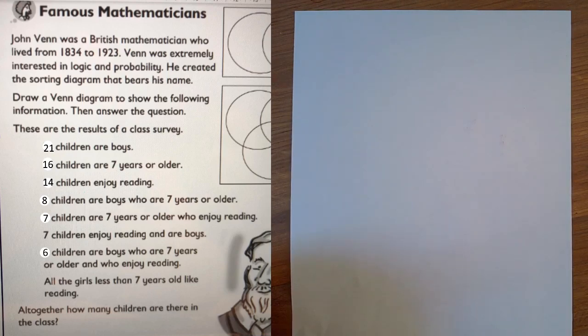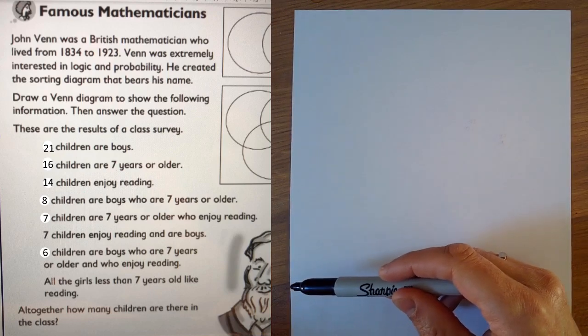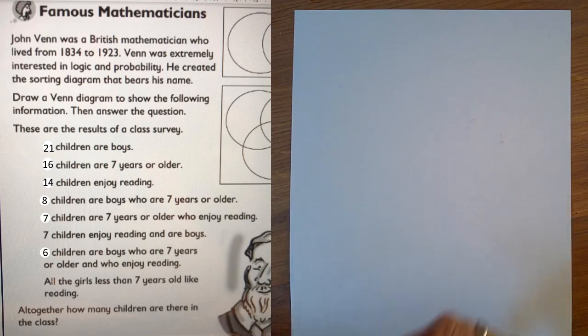I have to start by saying this is not the easiest Venn diagram question. Especially if you've never done any ones with two sets, this is a three set question. And the very last bit down here, this very last sentence about all girls less than seven years old like reading, you really have to understand Venn diagrams really well to be able to cope with that last bit.